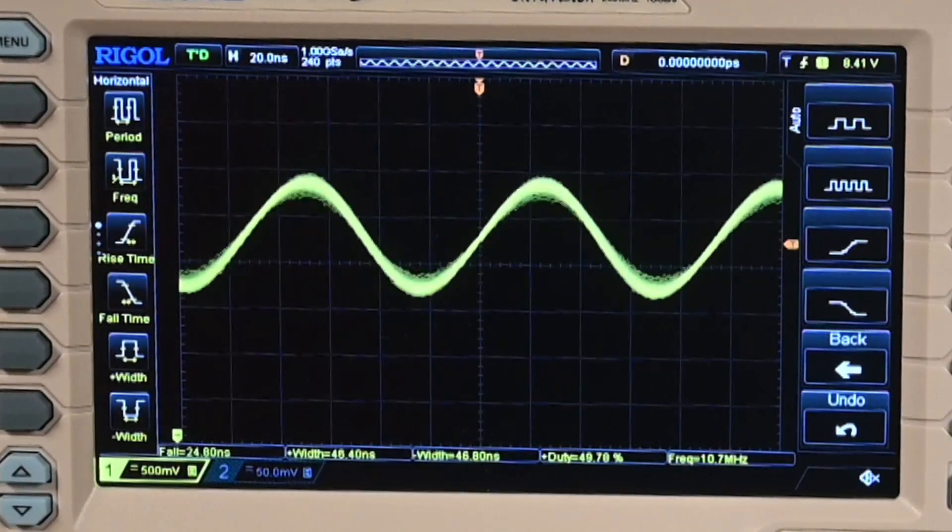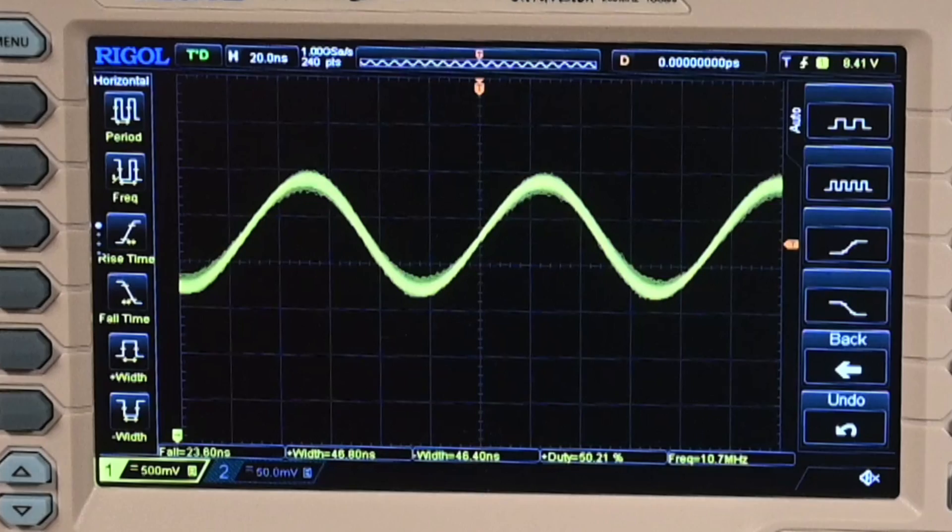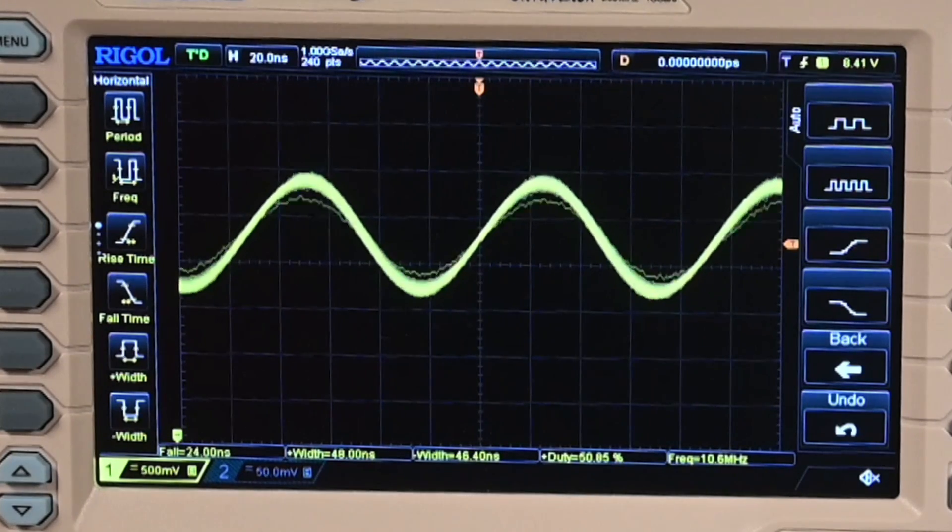This is the 10.7 megahertz IF carrier and as we look at this you don't really see a whole lot. If you look closely at the top and bottom peaks you can see that there is some movement but it's really hard to tell what's going on.